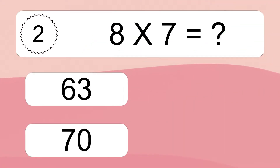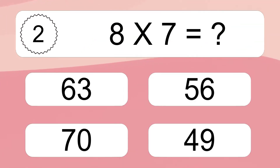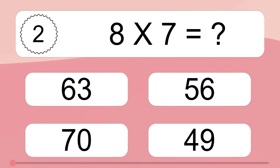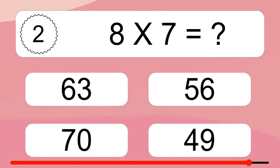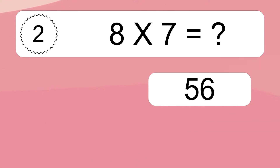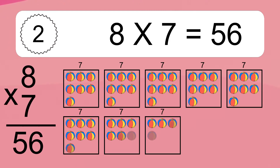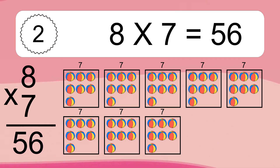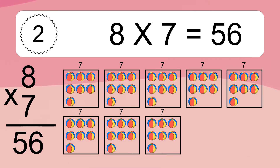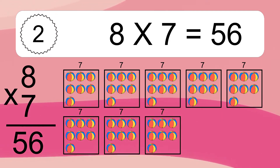8 times 7 equals what? 8 times 7 equals 56. We have 8 boxes, and each box has 7 colorful balls inside. If you count all the balls in all the boxes together, you will have 8 times 7 balls. This equals 56 balls.